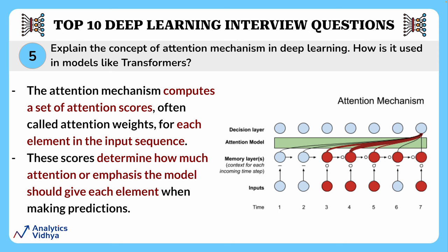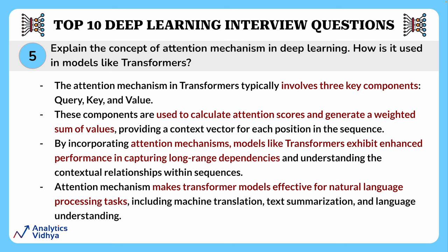These attention scores determine how much emphasis the model should give to each element when making predictions. Imagine you are reading a book and there's a highlighted section you focus on more than the rest — the attention mechanism in deep learning is somewhat like that. It helps neural networks pay more attention to certain parts of the input data. The attention mechanism in transformers involves three key components: query, key, and value, which are used to calculate attention scores and generate a weighted sum of values, providing a context vector for each position in the sequence.